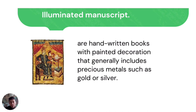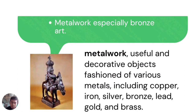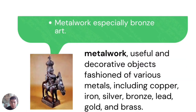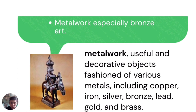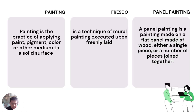Illuminated manuscripts are handwritten books with painted decorations that generally include precious materials such as gold or silver. Metal work involves useful and decorative objects made from various materials including copper, iron, silver, bronze, lead, gold, and brass. Painting is the practice of applying pigment, color, or other medium to a solid surface.